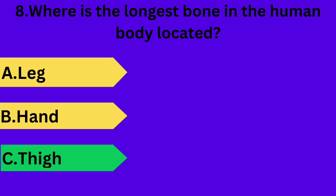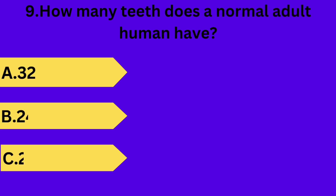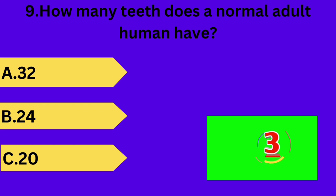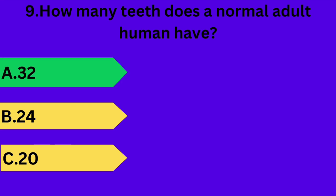And next question is: how many teeth does a normal adult human have? Option A: 32. Option B: 24. Option C: 20. Your time starts now. Answer is option A: 32.